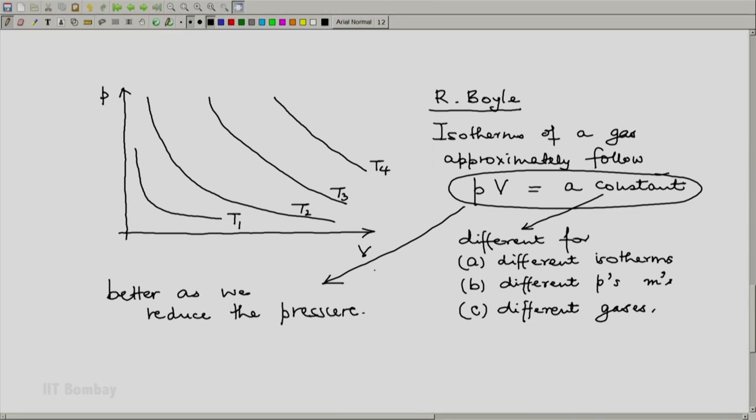And he discovered that this approximation becomes better as we reduce the pressure. That means this approximation is good at low densities of any gas. This, that at low densities, the isotherms of a gas are representable by a relationship PV equals constant, is known as Boyle's law.